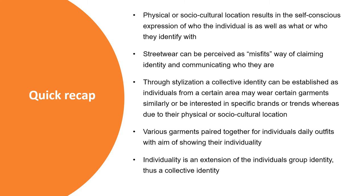A quick recap of last week's lecture. Physical or socio-cultural location — which is the individual's environment, what they experience in that environment, and who they interact with — can result in the self-conscious expression of who they are, as well as what or who they identify with. We also discussed streetwear, defined it, and characterised it as a way of claiming identity for people who feel they do not belong. We also discussed the concept of stylisation by Natal, through which a collective identity can be established as individuals from a certain area may wear certain garments similarly or be interested in specific brands or trends. This is also a result of their physical or socio-cultural location.